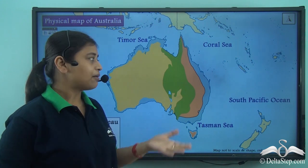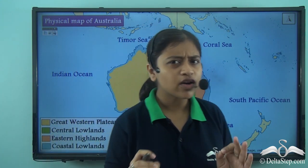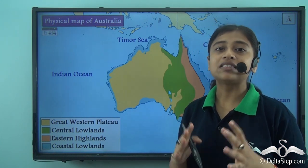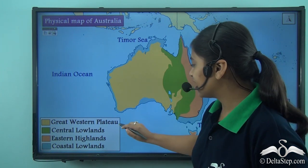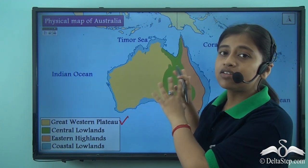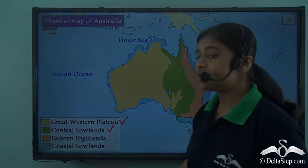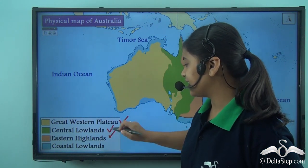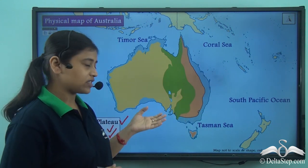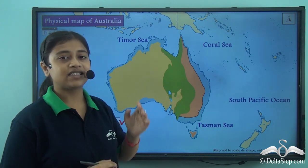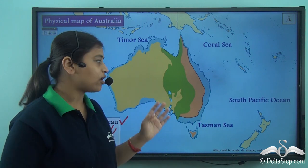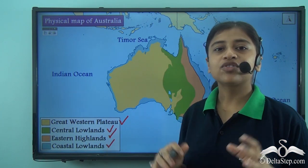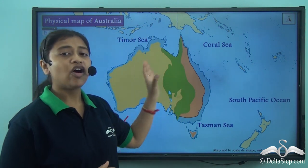Looking at the map of Australia, the distinct geographical features of the continent can be divided under four main headings: the Great Western Plateau, which dominates two-thirds of the continent; the Central Lowlands, which lies almost at the centre; the Eastern Highlands, which falls on the eastern part right beside the Central Lowlands; and a narrow Coastal Plain that surrounds almost the entire continent — the Coastal Lowlands.